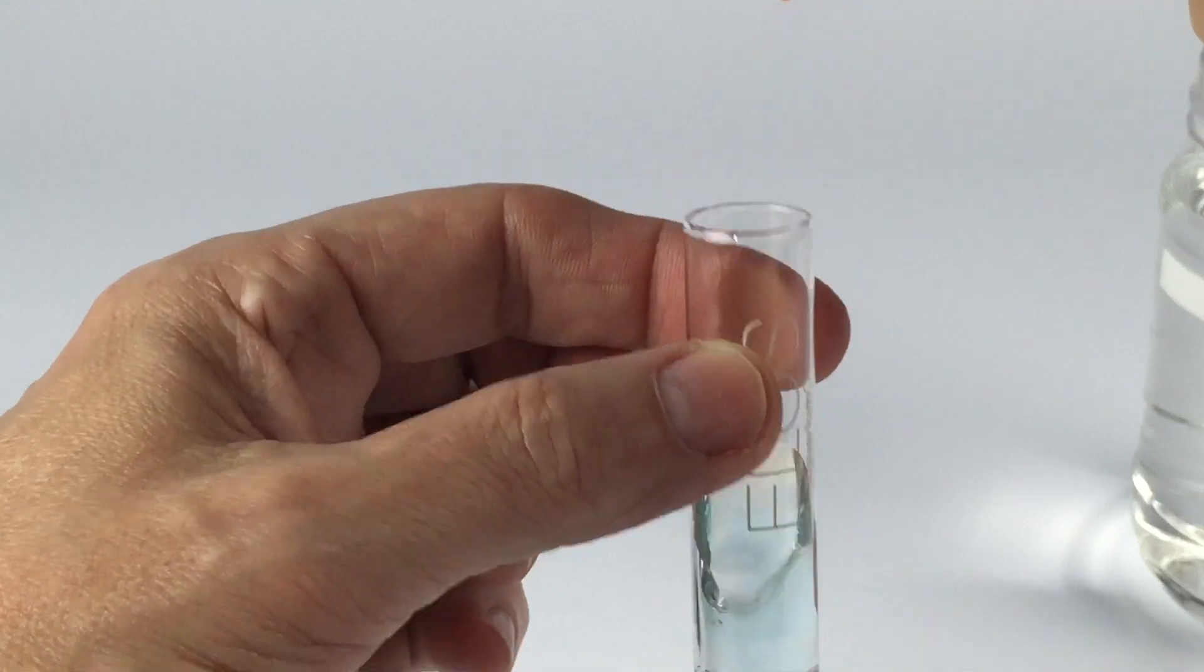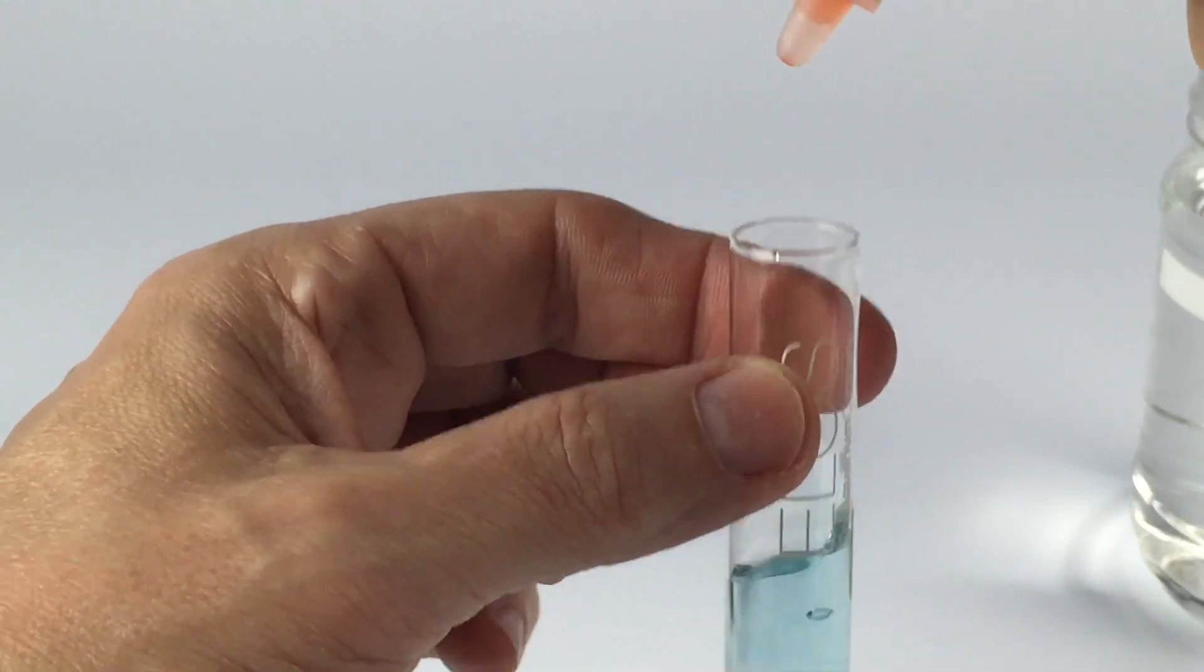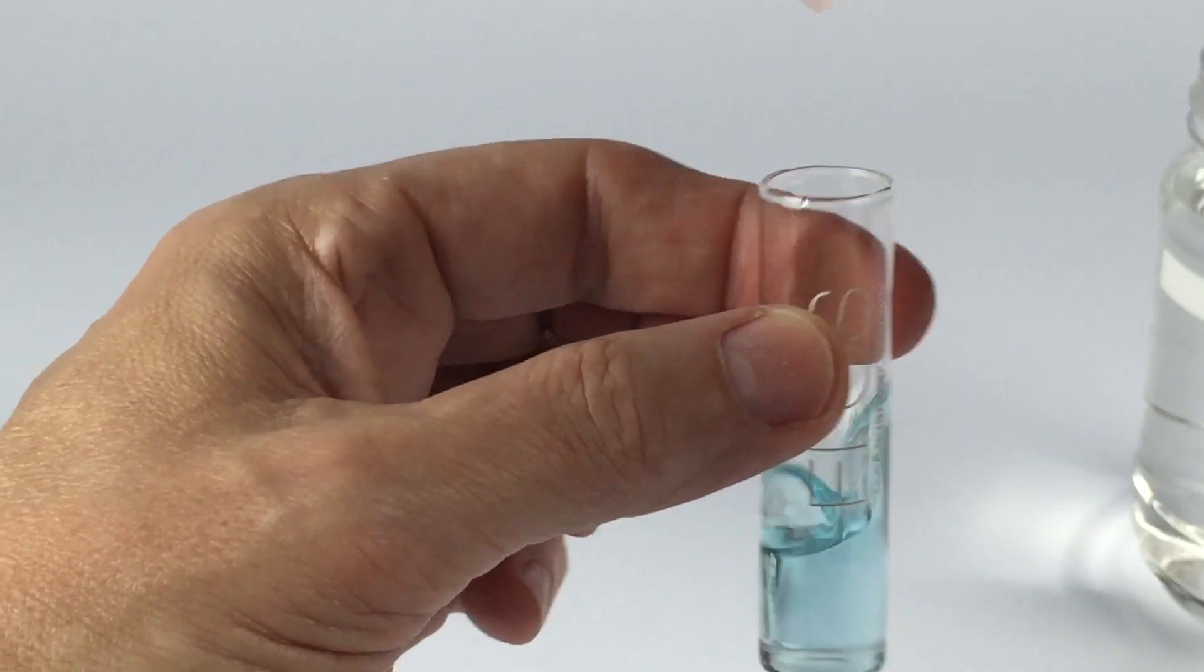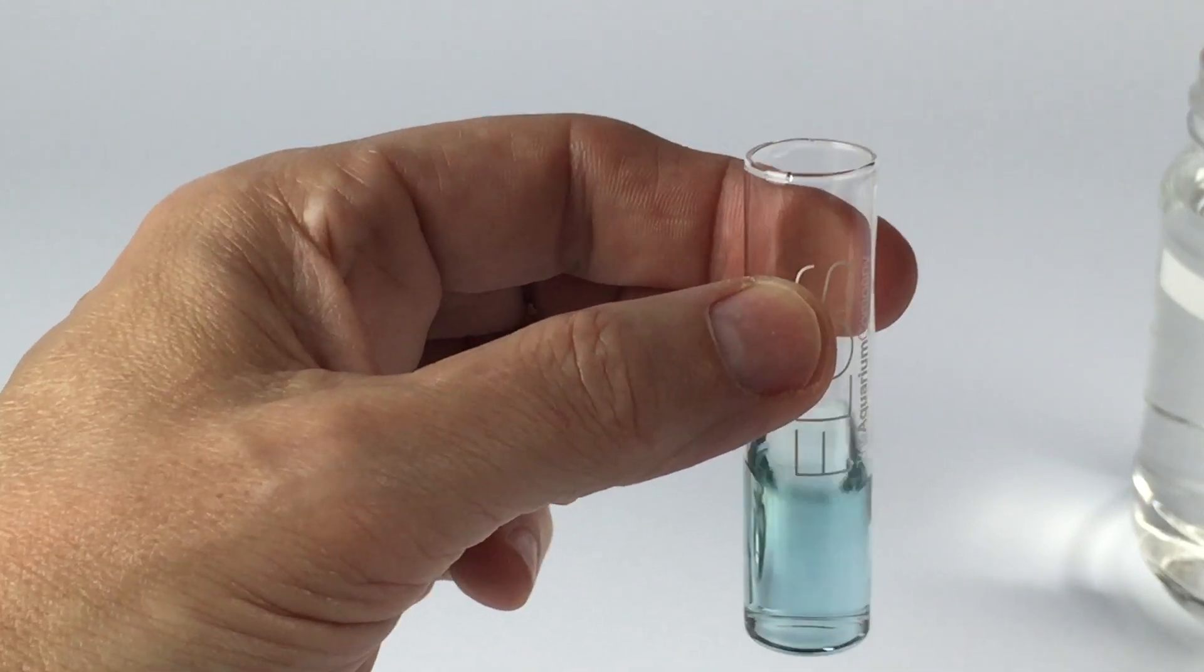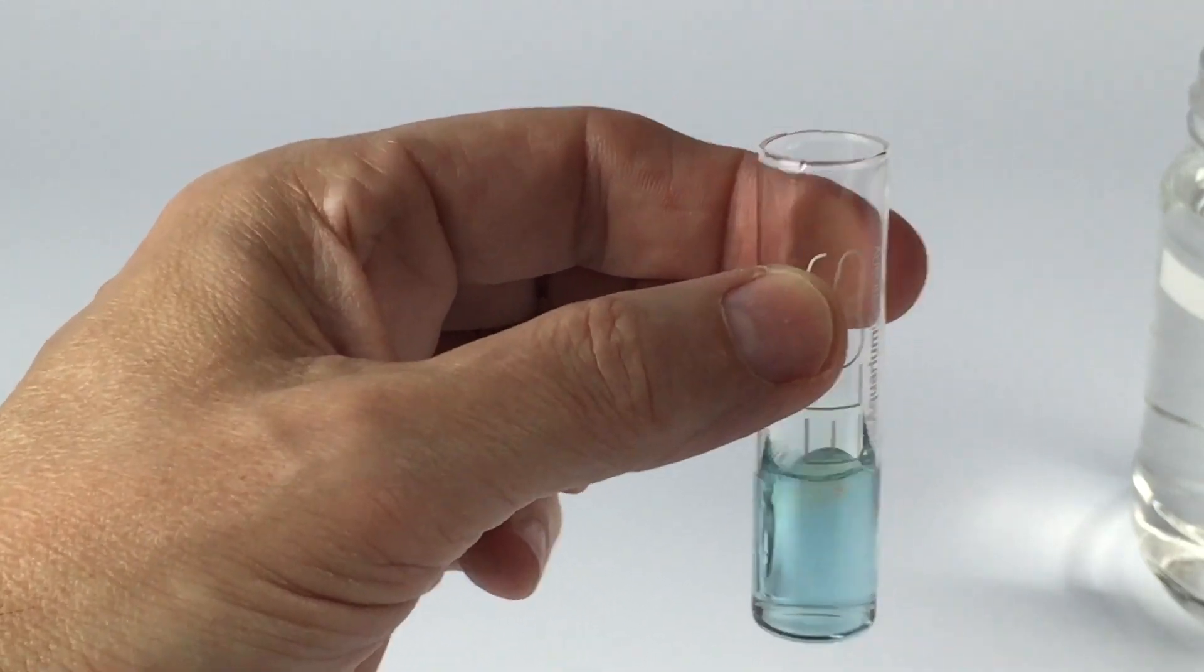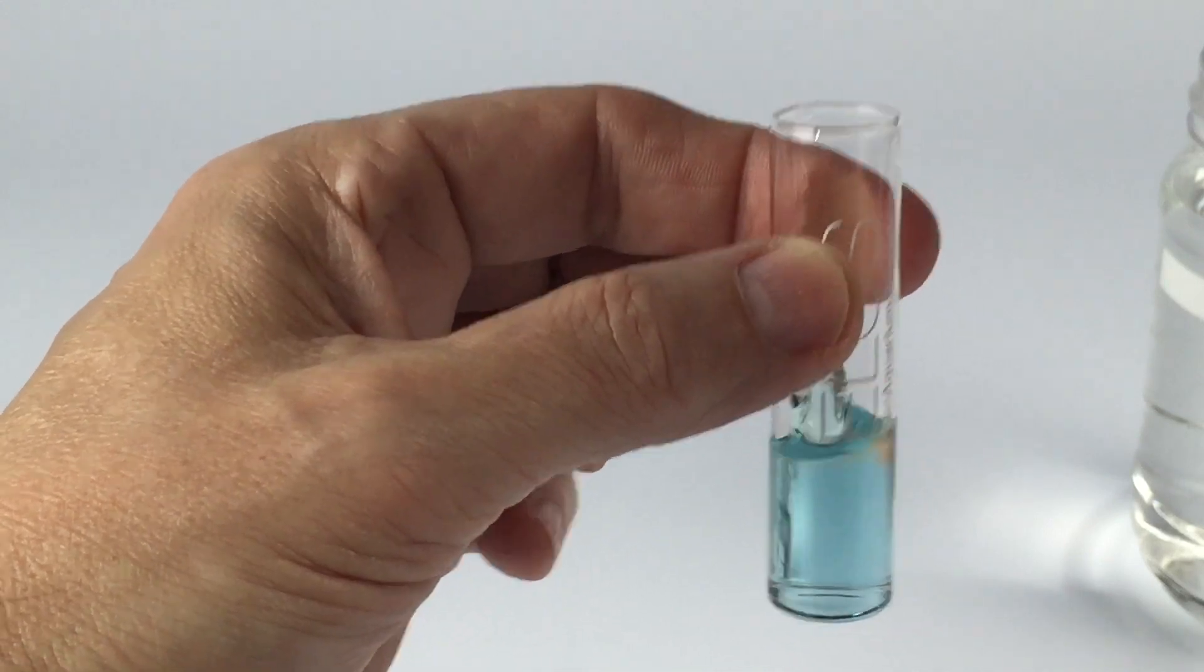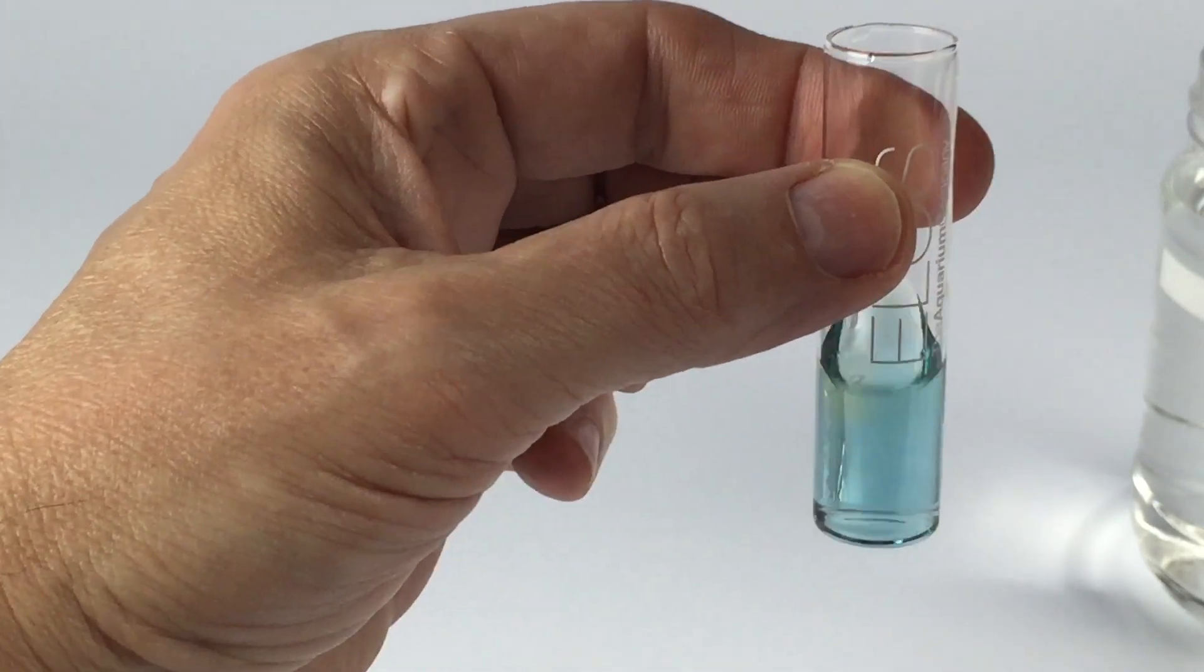As you add each drop to the solution you'll notice it becomes more and more blue until it hits that final tipping point where then it shifts over to an amber yellow color. What you want to see is when it comes to that color and stays that color. That will be your final product.